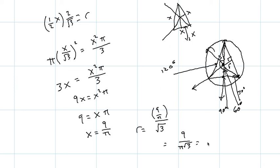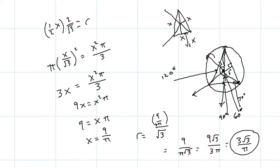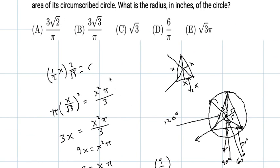And what we can do here is multiply the numerator and denominator by √3 to rationalize the denominator. So 9√3/(3π). And then just simplifying, 9 divided by 3 is 3. So we get 3√3/π as the measure of the radius. And we see that that is choice B.